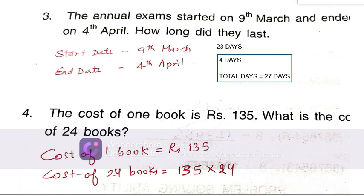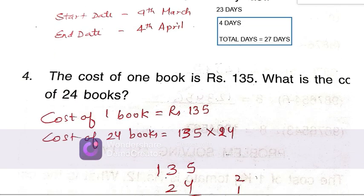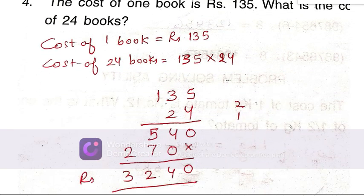The cost of 1 book is 135. What is the cost of 24 books? Multiply 135 by 24, you will get the answer here.